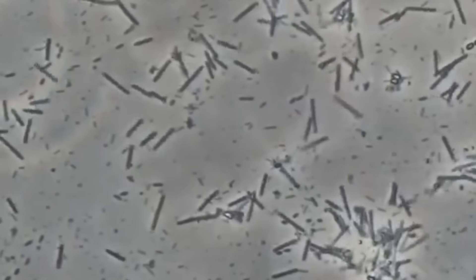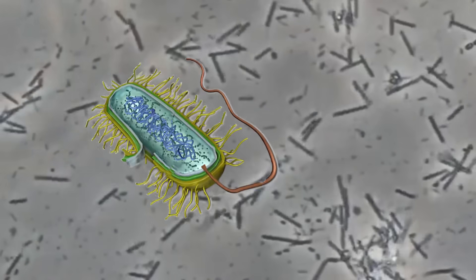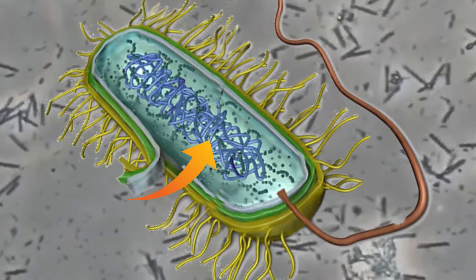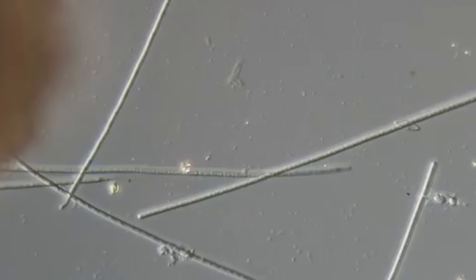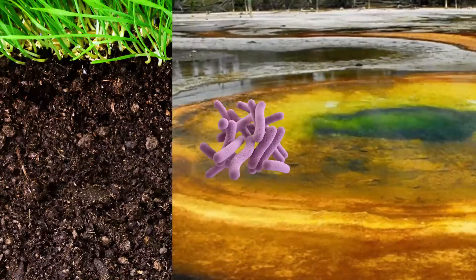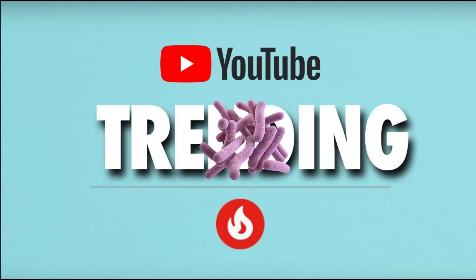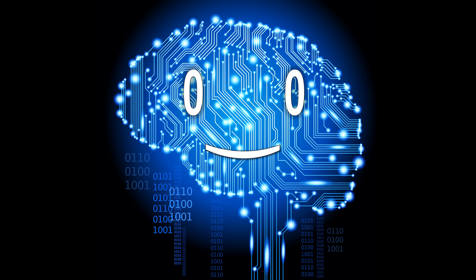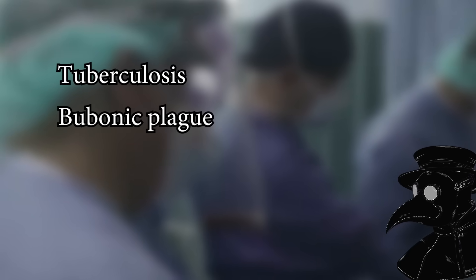Bacteria are single-celled organisms with a simple internal structure that lack a nucleus, and contain DNA that just freely floats inside. They were one of the first forms of life to appear on Earth and thus evolved to live in water, soil, acidic hot springs, radioactive waste, and inside other organisms. And while some of them are helpful for digestion, certain species of bacteria are responsible for diseases like tuberculosis or the bubonic plague.